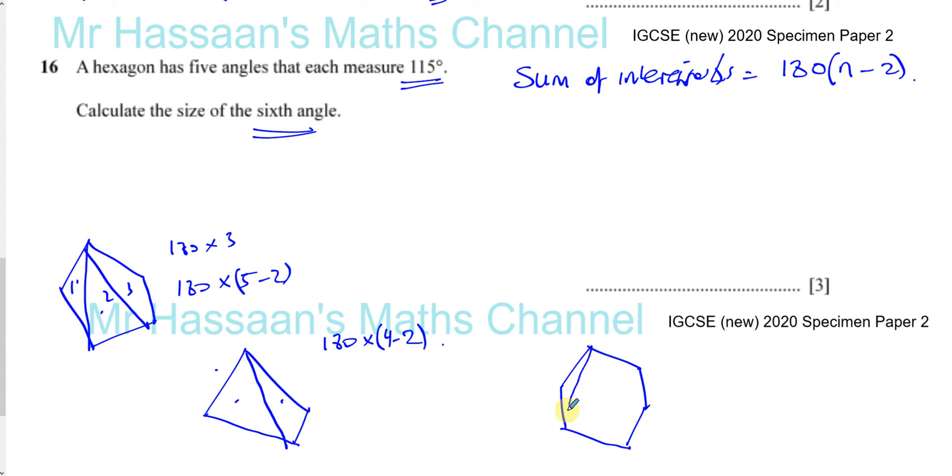So if I was to do the same thing here, make a line from there to there, and a line from there to there, and a line from there to there, I have one, two, three, four triangles. So this is 180 times four, and the number of sides is six, so it's like 180 times six minus two. So the number of sides in the polygon minus two tells you how many triangles there are going to be when you split them like this in whatever polygon it is.